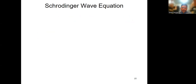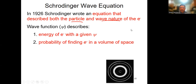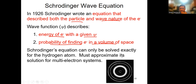What Erwin Schrödinger did in 1926 was write an equation that describes both the particle and wave nature of the electron. He took advantage of the proposal that the electron can have wave-like properties and put forward a wave function that describes the energy of the electron and the probability of finding the electron in a volume of space.